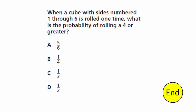When a cube with sides numbered 1 through 6 is rolled one time, what is the probability of rolling a 4 or greater? Think of a dice — a cube with 6 sides each numbered 1 through 6. When I roll this, it lands on one of those numbers. The probability of rolling any one of them, say a 1, is 1 out of 6 possibilities. That's how you write a probability.